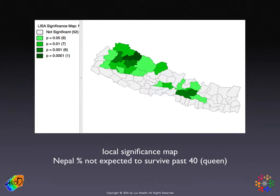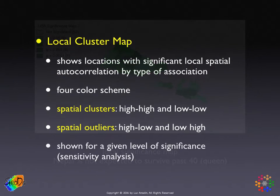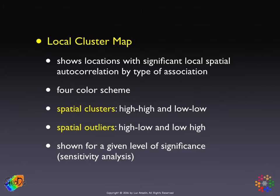From the significance map we don't really know whether it's a cluster or a spatial outlier — we just know that it's significant. What we really want to use is what I call a local cluster map, which is a combination of information on the local statistic, information on its sign, and where the particular location falls in the Moran scatterplot.